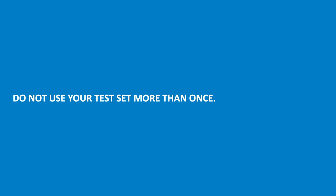You shouldn't use your test set more than once. When building a model, the first step in any project is to split off your test set and put it to the side — don't touch it until you're ready to state what your final model is. Once you've tested different architectures and tuned hyperparameters like learning rate and batch size using the validation set, and you've fully committed to one model, then you can use the test set. The more often you use the test set, the less valuable it becomes. The proper way is to split off a validation set and do all your tuning on that.